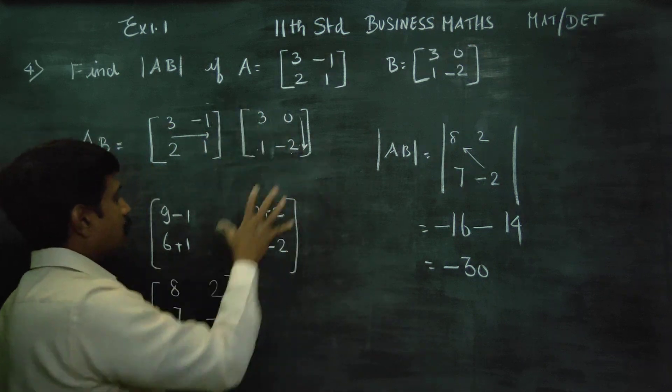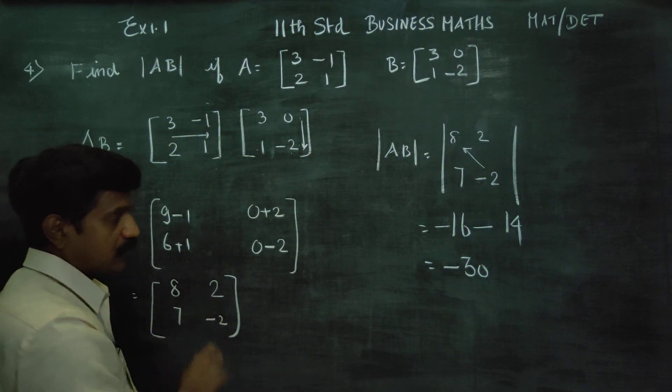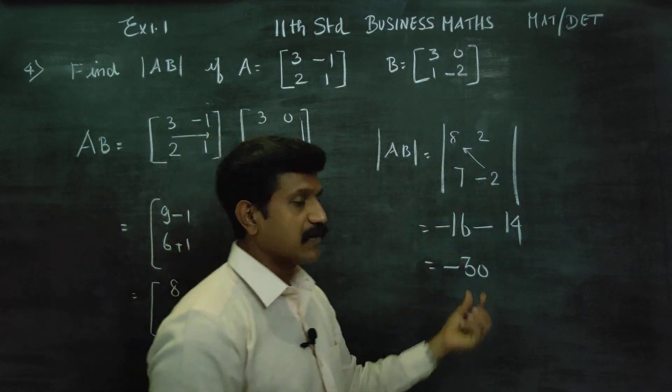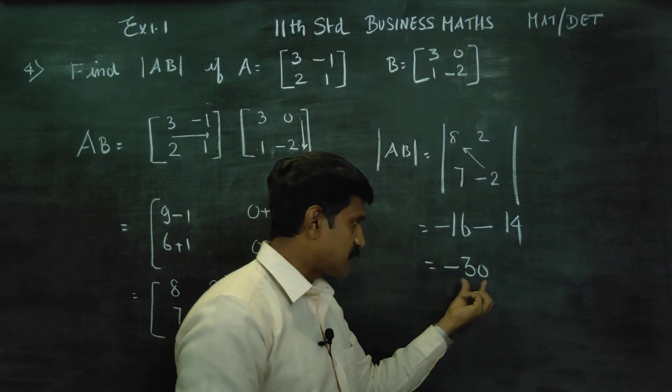The matrix has 4 values, but the determinant reduces to a single value. So your answer is minus 30.